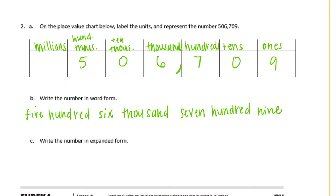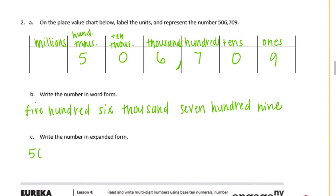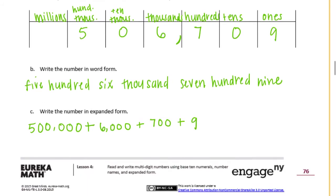And part C: write the number in expanded form. We have a 5 in the hundred thousands, which would be five hundred thousand. No ten thousands — you can either put plus zero or just forget about it. Six in the thousands: six thousand, plus seven hundred. Nothing in the tens place, and a nine in the ones. There is your expanded form.